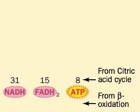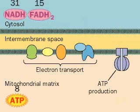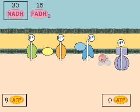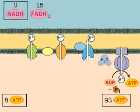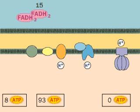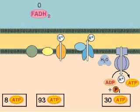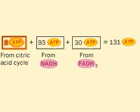For the payoff, let's see what happens when these electron carriers reach the electron transport chain and oxidative phosphorylation. Each NADH entering the chain produces about three ATPs — we have rounded the numbers off for simplicity — for a total of approximately 93 ATPs from 31 NADHs. Each FADH2, again rounding the numbers, makes two ATPs, or 30 from FADH2s. Remember that eight ATPs have already been made in the citric acid cycle.